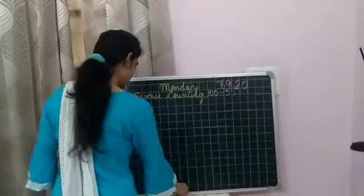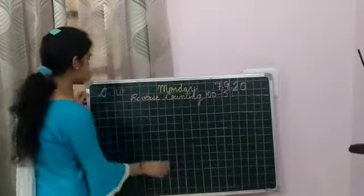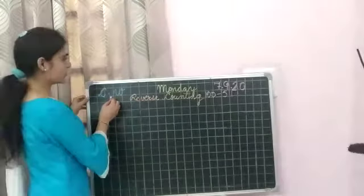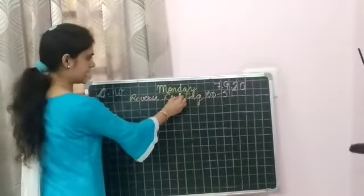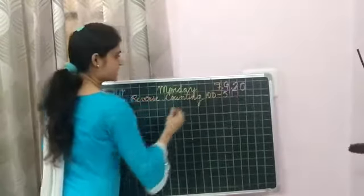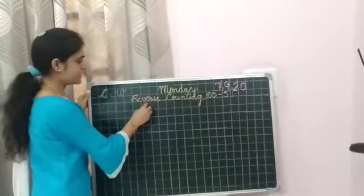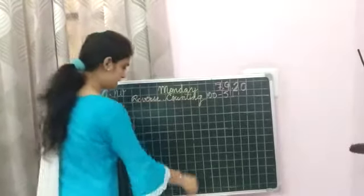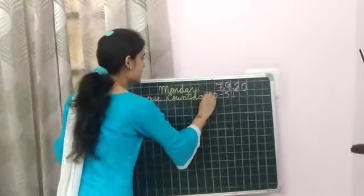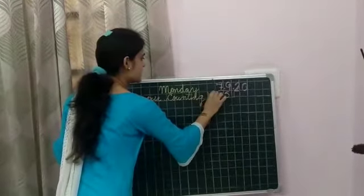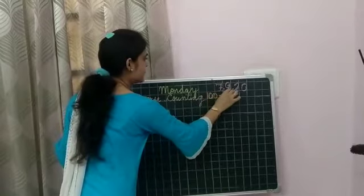Then take out your notebooks and sharp pencils and we will start reverse counting. Come. First of all, write down classwork, day and date. Then heading: Reverse counting, hundred to fifty-one.